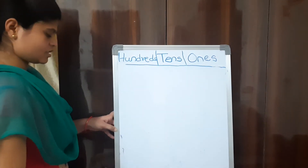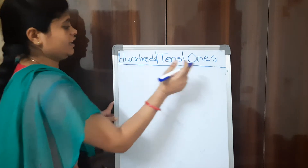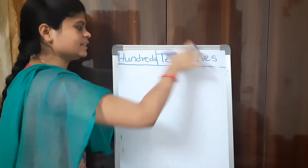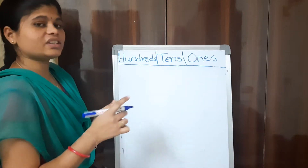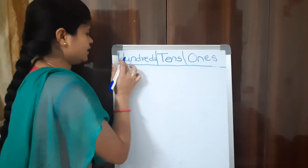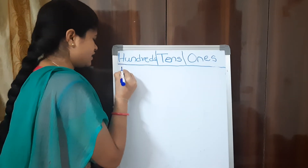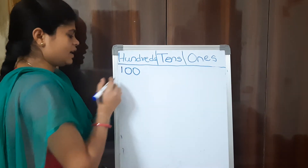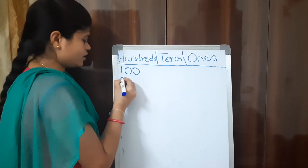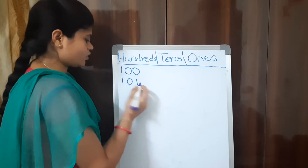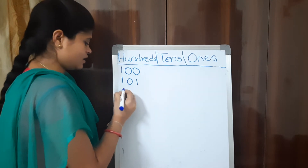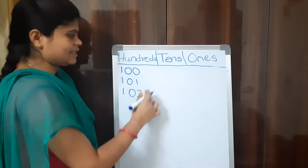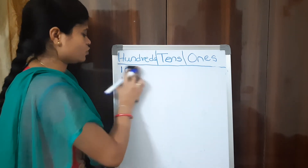Since this is a 3-digit number, we have 3 blocks. In 2-digit numbers we had only 2 blocks — the 1s and 10s. Now we are dealing with 3 digits, so we also have the 100s block. After 100, which is our smallest 3-digit number, we add 1 to get 101, then 102, and so on. We will write all these numbers in their place values.